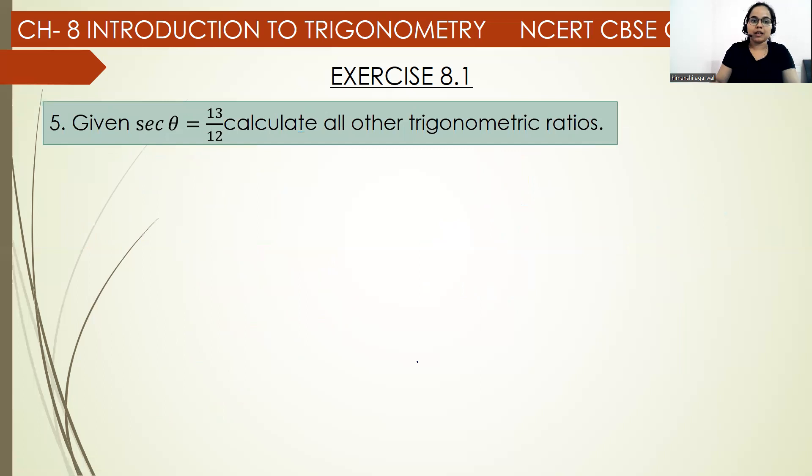Now let's come to the second question. In question 5, it is given sec theta equals 13 upon 12. We need to calculate all other trigonometric ratios. One ratio is given, we have to find the rest of the five ratios. So sec theta equals 13 upon 12, which means hypotenuse upon base.